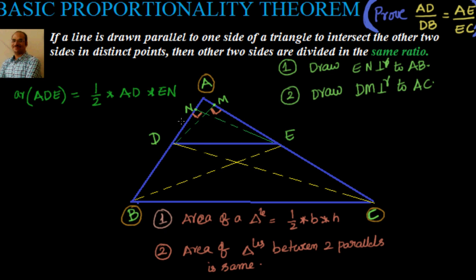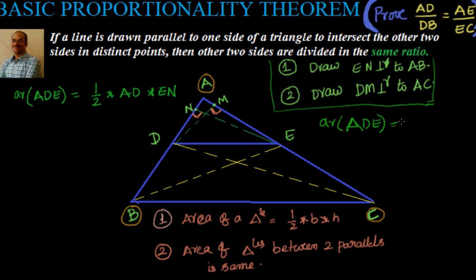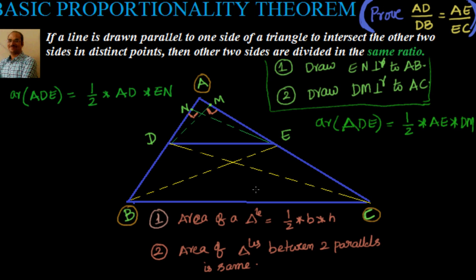Similarly, we can also find the area of triangle ADE another way. If we use AE as the base instead, then area of triangle ADE equals half into AE into DM, where DM is the altitude. So we have the area of ADE expressed in two ways — with AD and AE at the top — and EN and DM cancel when we divide.